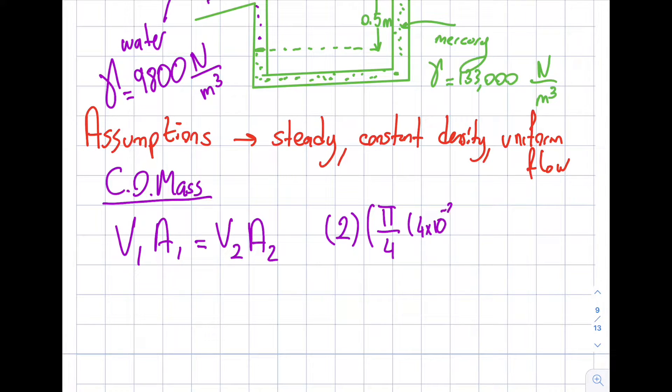Will be equal to the exit velocity, which I don't know, and area is pi over 4. This time around the exit diameter is 1 centimeter.